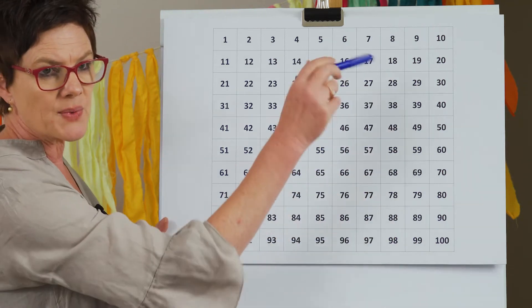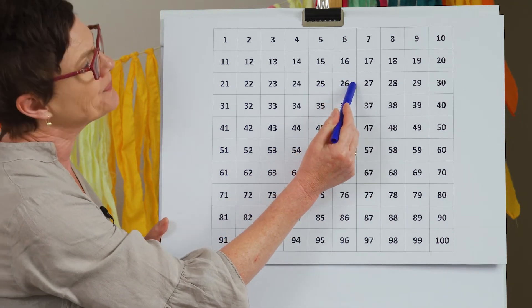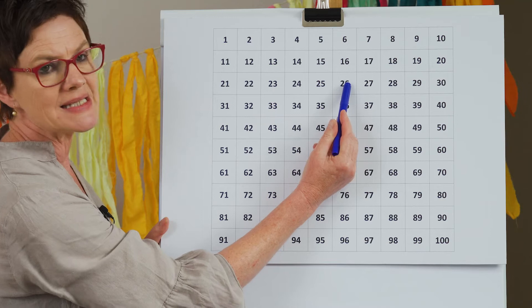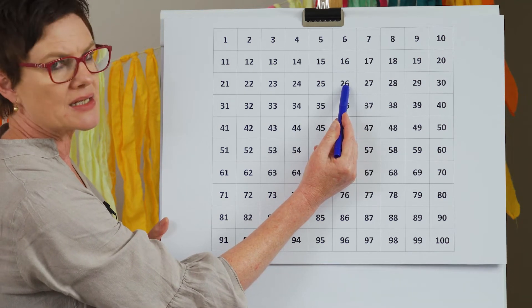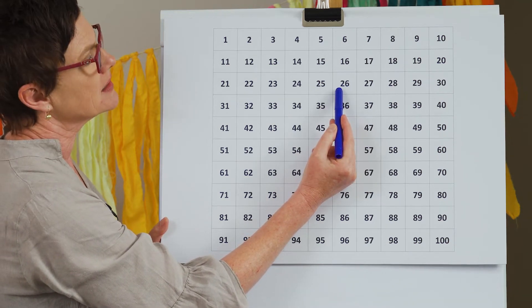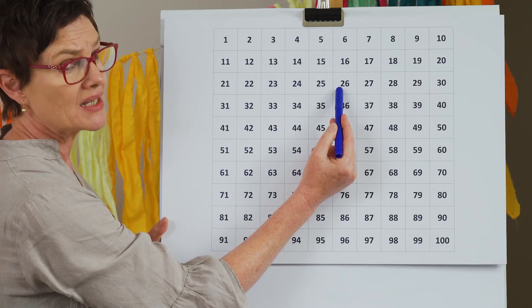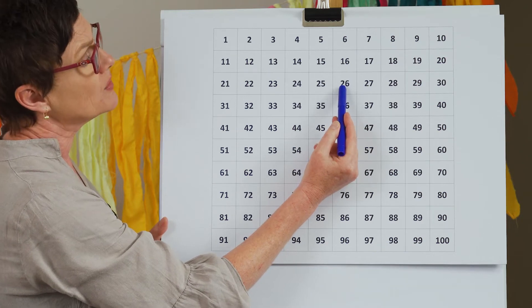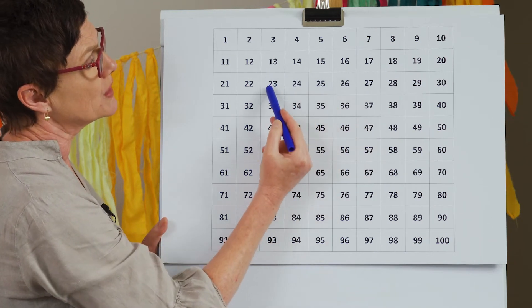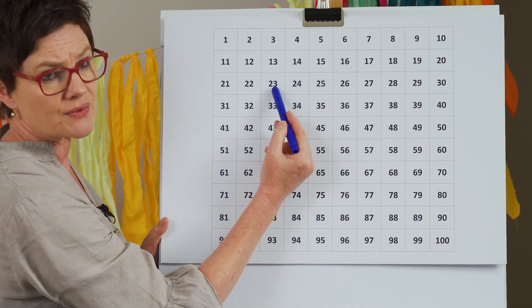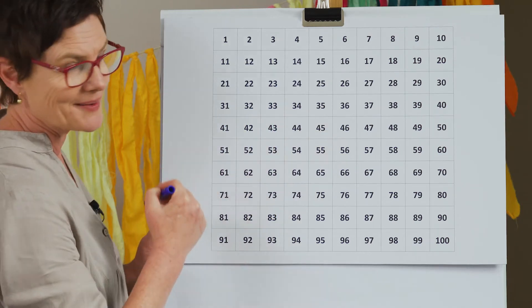One last one before it gets too tricky. 26 — three less than 26. You're right, 23. Let's have a look: one, two, three — 23. That magical number again.